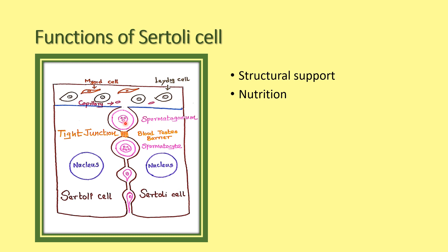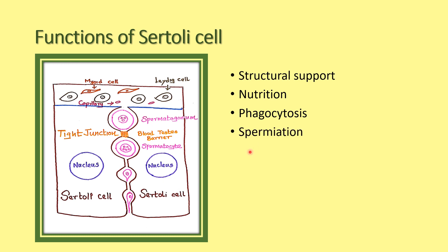Iron-binding proteins are produced by Sertoli cells, which are important for the nutritional support of the spermatocytes during spermatogenesis. Some waste products are produced during spermatogenesis, and those waste products are engulfed by phagocytosis. So Sertoli cells have the function of phagocytosis.